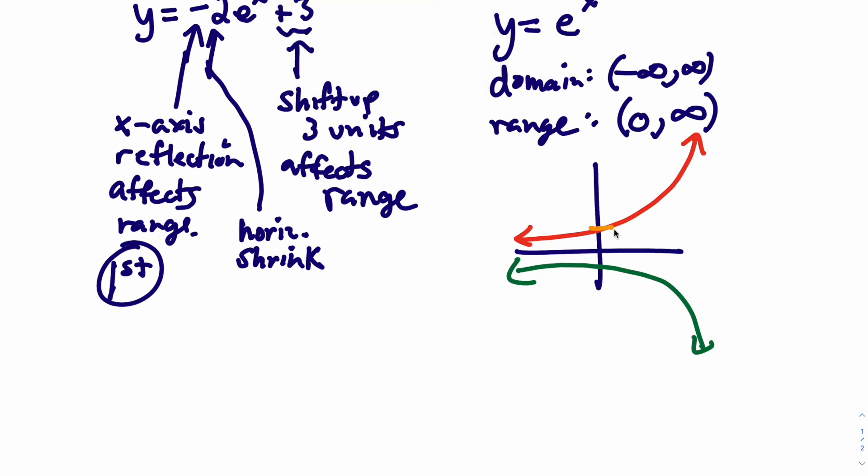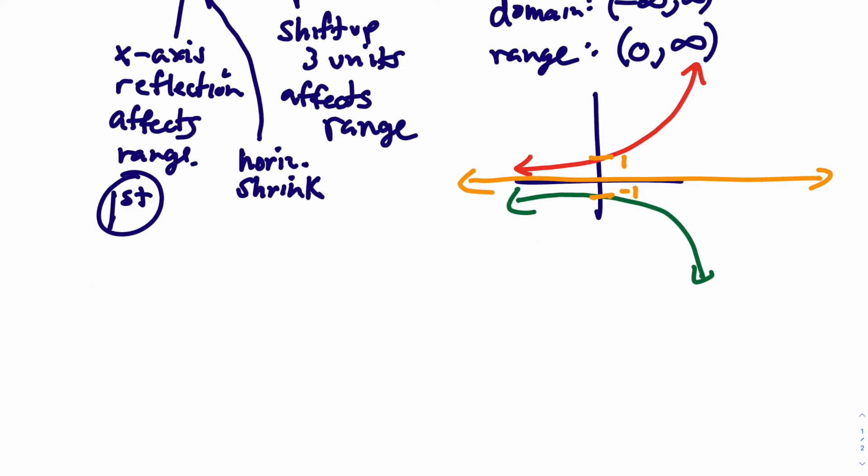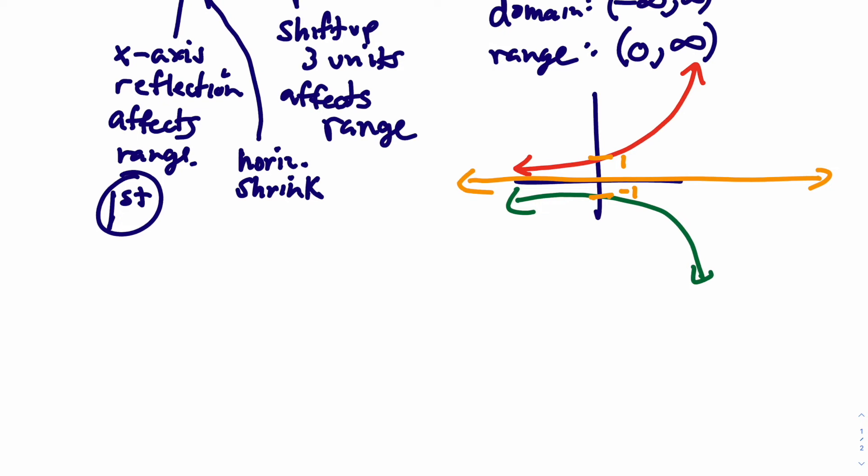This here hits at 1, and when you reflect, it hits at negative 1. Now you want to shift that up 3 units. This here is a horizontal asymptote. That goes up 3 units as well. The graph is going to look like this, where that's an asymptote.